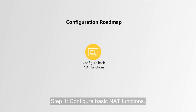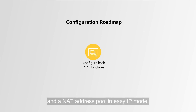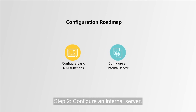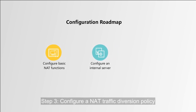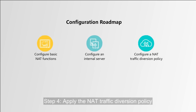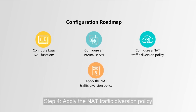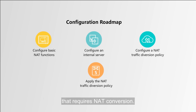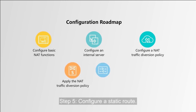Step 1: Configure basic NAT functions. This step involves creating a NAT instance and a NAT address pool in EasyIP mode. Step 2: Configure an internal server. Step 3: Configure a NAT traffic diversion policy based on ACL traffic classification rules. Step 4: Apply the NAT traffic diversion policy to a specified outbound interface that requires NAT conversion. Step 5: Configure a static route.